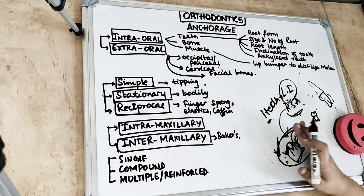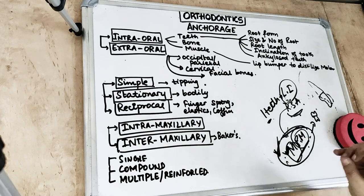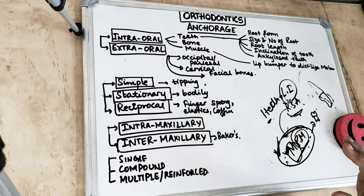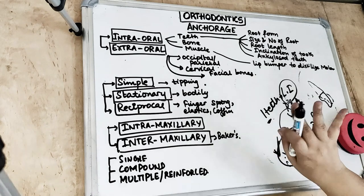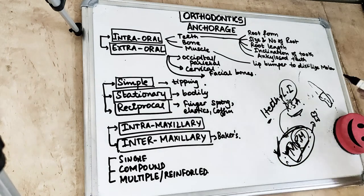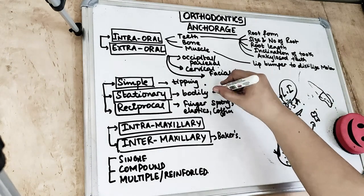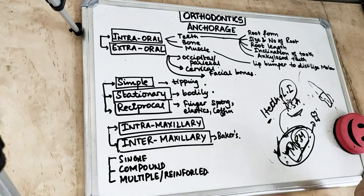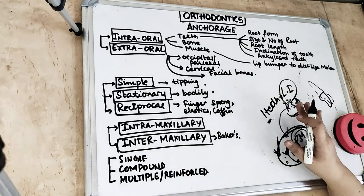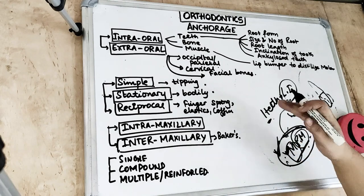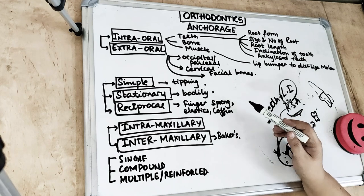The second type is stationary anchorage, in which the application of force displaces the anchorage unit bodily. What stationary anchorage produces is bodily movement of the tooth. The resistance offered by the anchorage providing bodily movement is greater than that providing tipping movement.